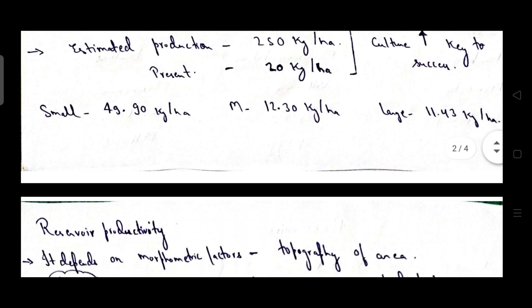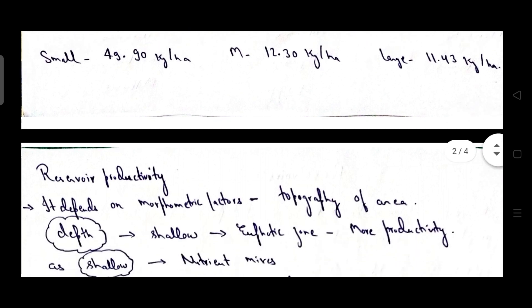Then contribution from types of reservoirs to the production potential is from small reservoir, it is 49.90 kg per hectare. From medium reservoir it is 12.30 kg per hectare and from large reservoir it is 11.43 kg per hectare.